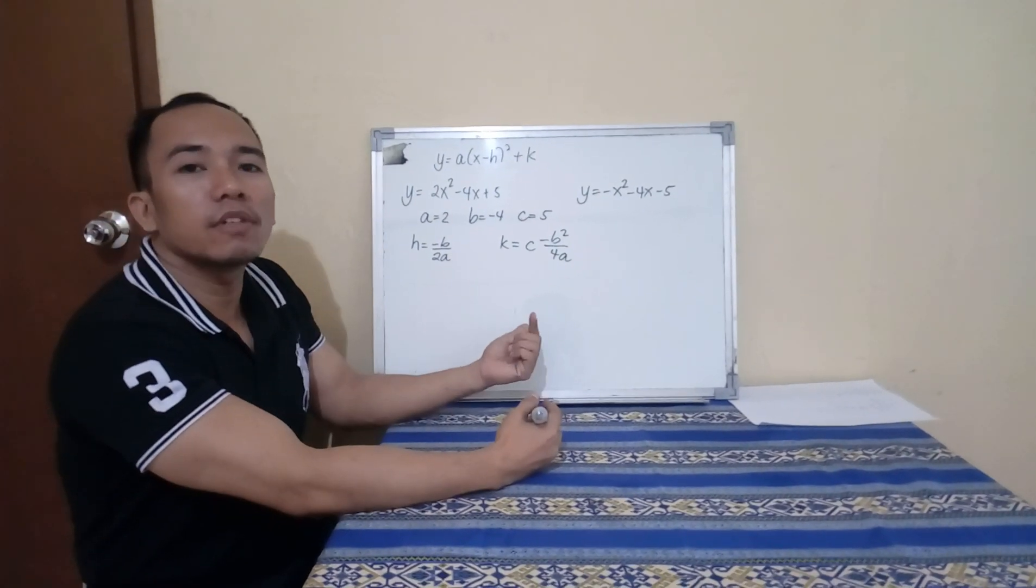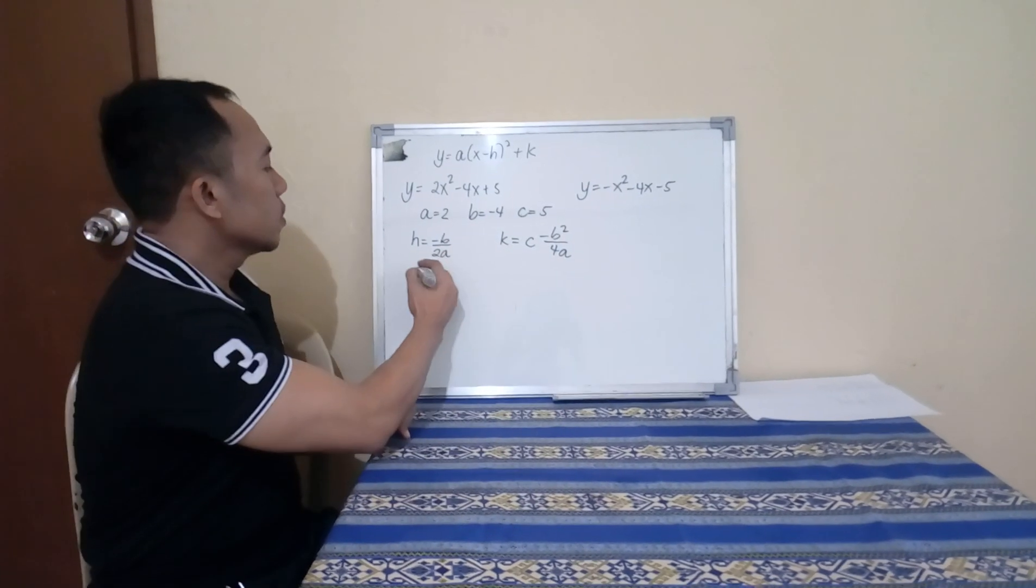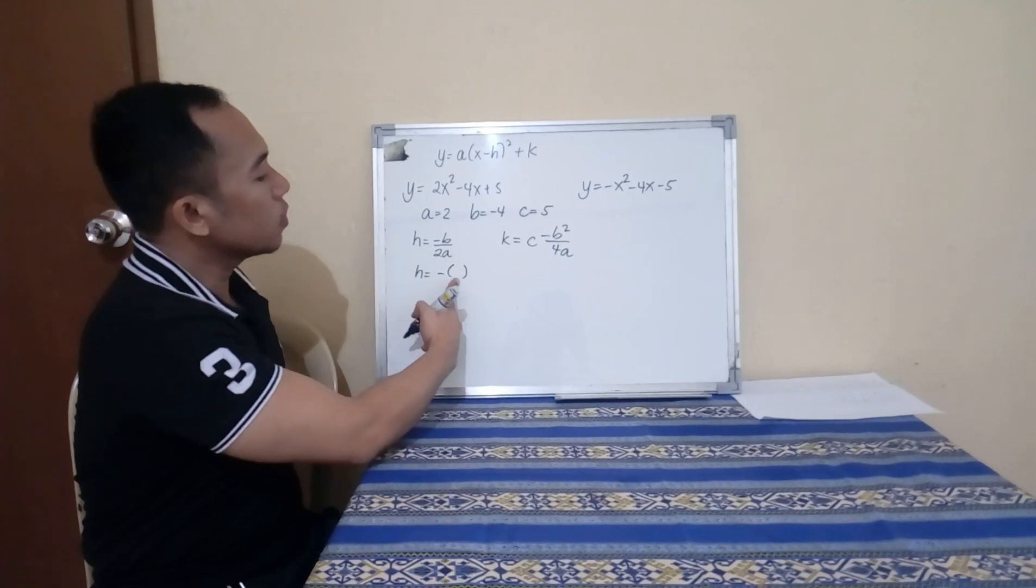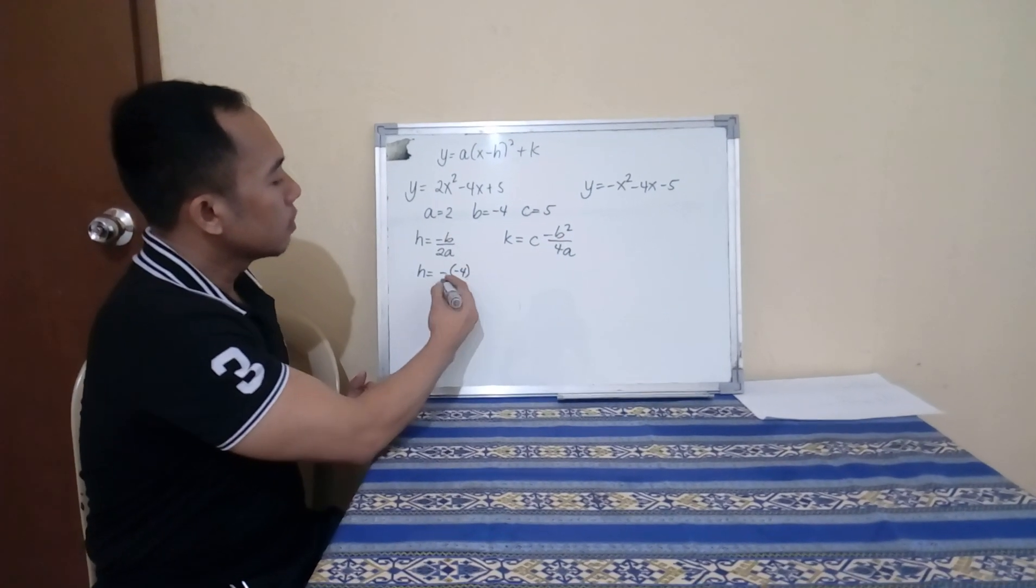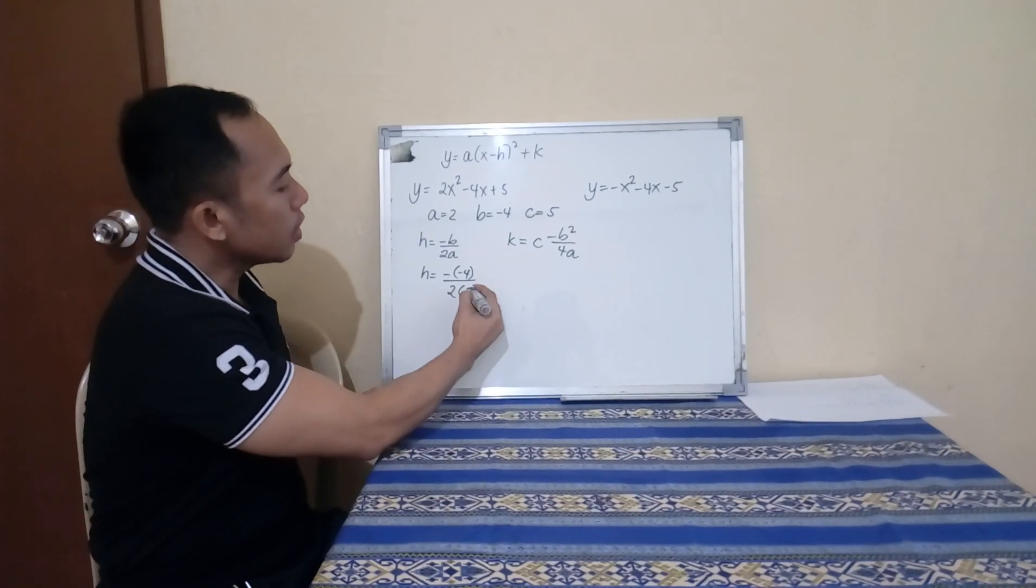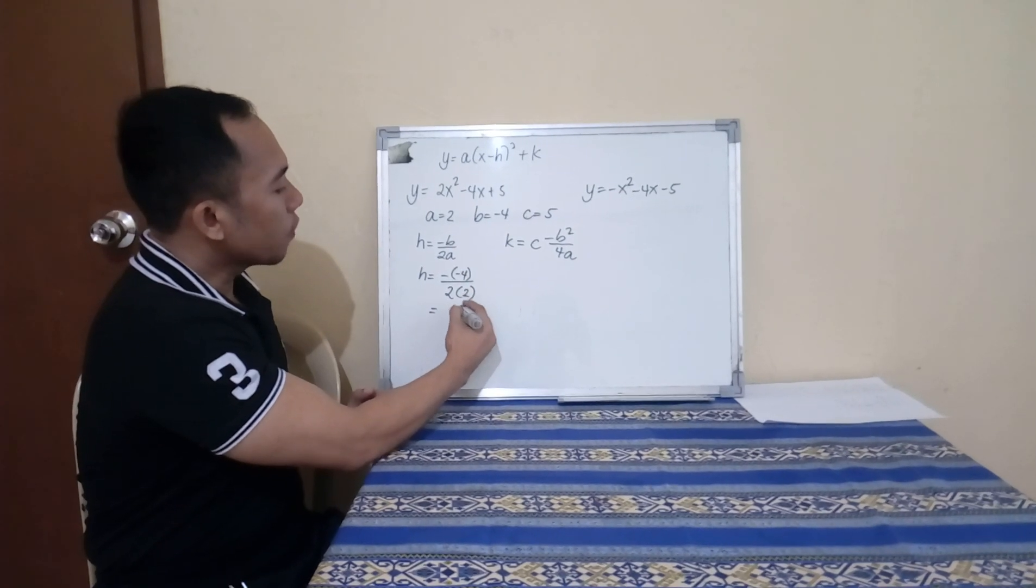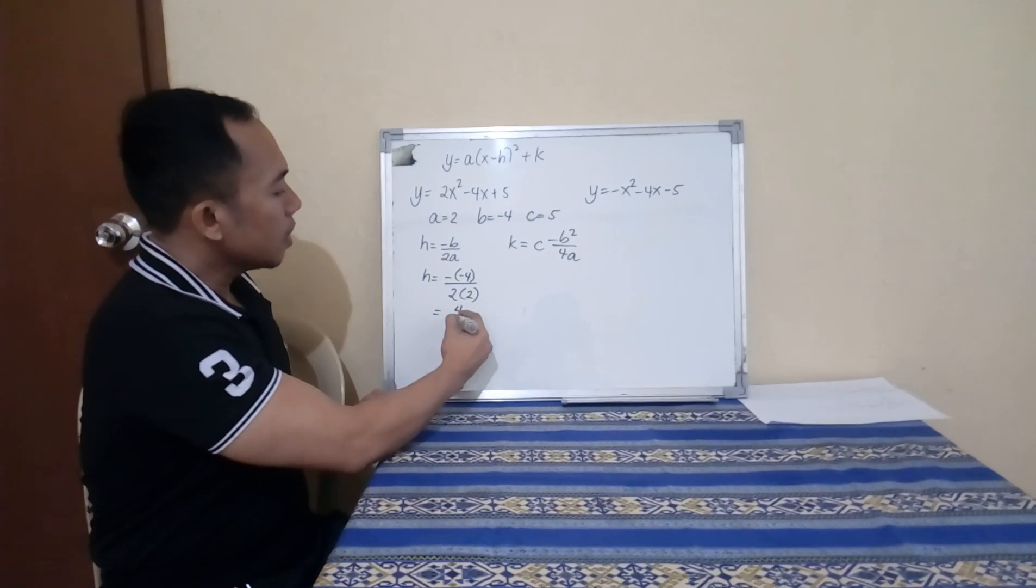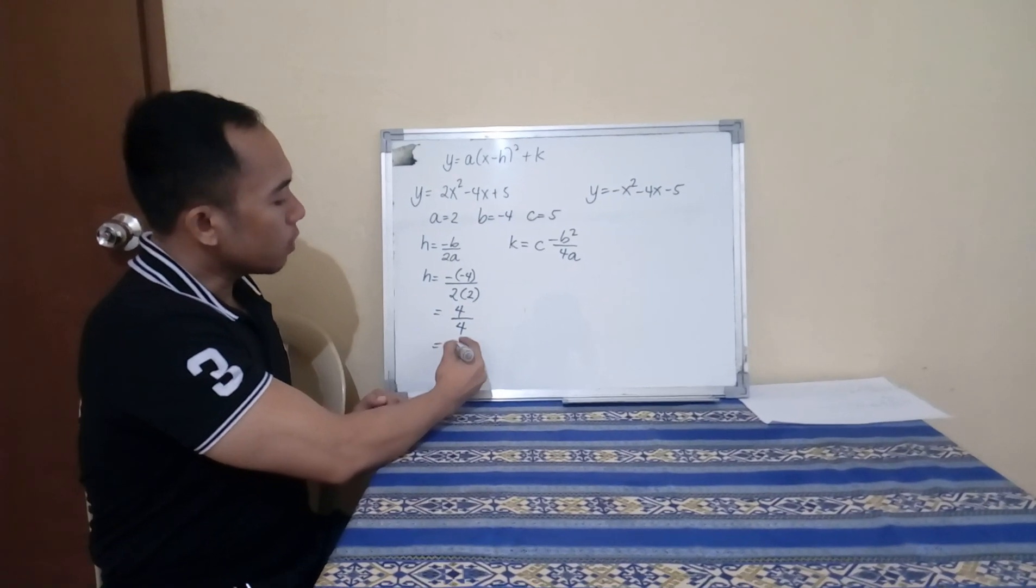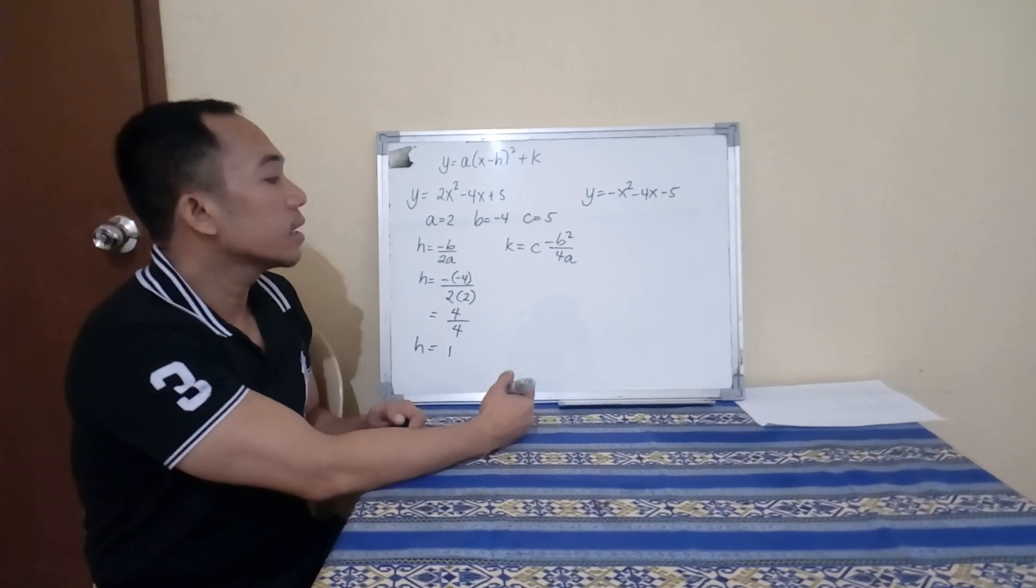We will just substitute all the values of the letters here. For H, you have negative 4 for B over 2, and then substitute 2 for your A. This becomes positive 4 because you have 2 negatives, and then over 4, 2 times 2. This is now equal to 1. So your H is equal to 1.